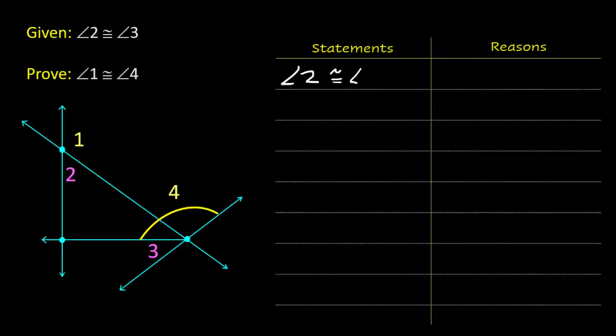Angle 2 is congruent to angle 3 and that's a given. Well, what does that mean? It means the measures are equal.